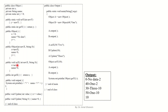Then we have a set method that takes newX and s and sets the values of x and name. We have a get method that returns the value of x. We also have an output method that prints x, dash, name, dash, and y. This is a void method that only does the output.